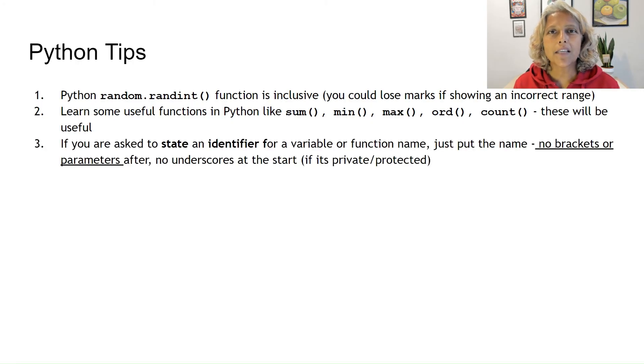If you're asked to state an identifier or a function name, just put the name. No brackets, no parameters after, no underscores at the start if it's private or protected.